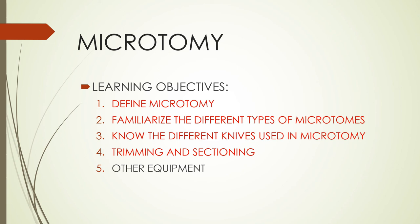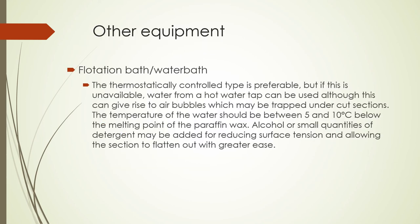Now we're done with the four major learning objectives. We defined microtomy, familiarized ourselves with the different types of microtomes, learned the different knives and how to care for them, and learned trimming, sectioning, and troubleshooting. For the other equipment used in microtomy: first, you have your flotation or water bath. The thermostatically controlled type is preferable. The temperature should be between 5 and 10 degrees Celsius below the melting point of the paraffin wax — so if your wax melts at 56°C, set it to 50°C. Alcohol or small quantities of detergent may be added to reduce surface tension and allow sections to flatten with greater ease.